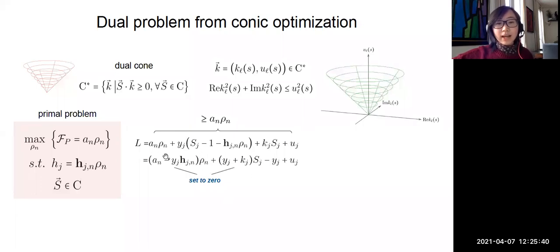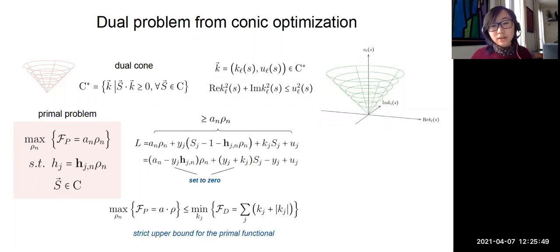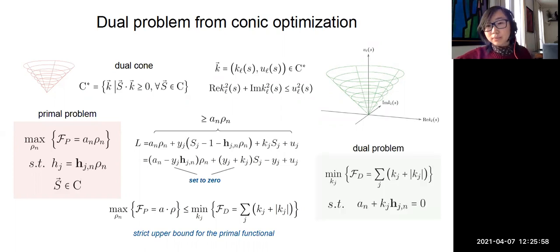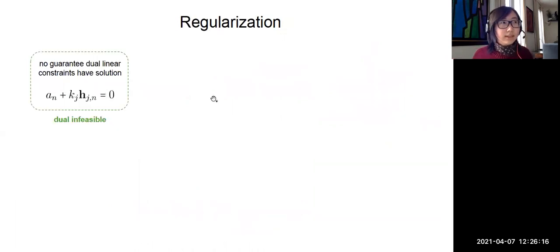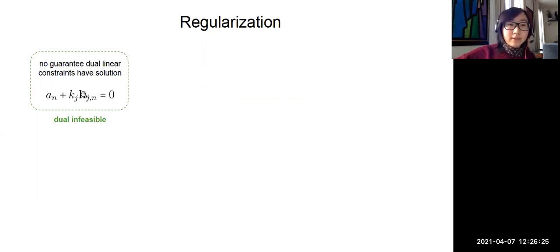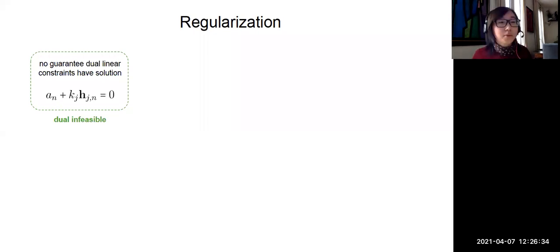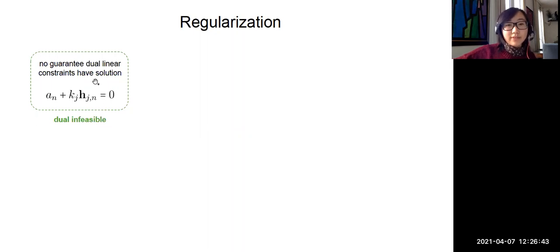The remaining term defines the dual functional, which after minimization gives an optimal bound on the primal. The dual problem is parameterized by dual cones, minimizing the dual functional subject to linear constraints arising from setting those coefficients to zero. One issue is there is no guarantee the dual linear constraint has solutions — this depends on the linear operator and the coefficient a defining the primal functional. For the S-matrix problem we're considering, the dual problem turns out to be infeasible, so we need to regularize the primal problem.